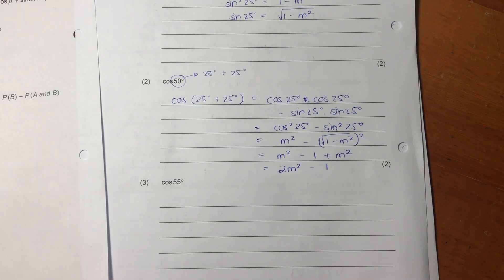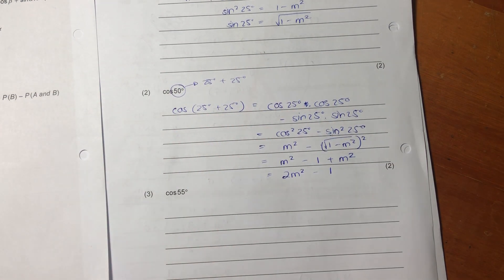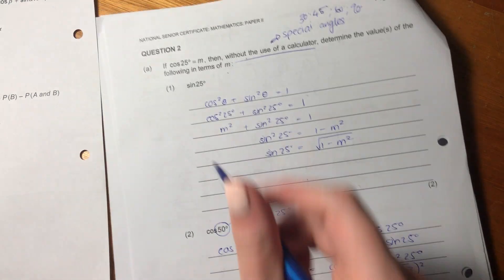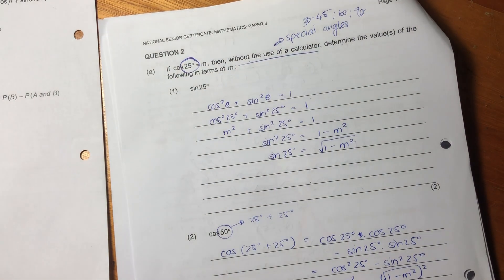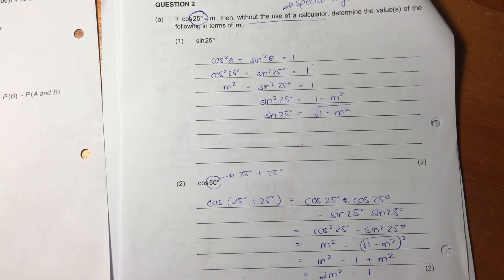So the trick here again is to identify what is the best identity to leverage in these questions. I know that it might seem easy for me because I'm just identifying it for you, but always go back to what you've been given. Always try to find a 25, and when you can find that 25, then you know that you can then bring it back to the m.